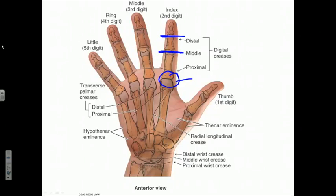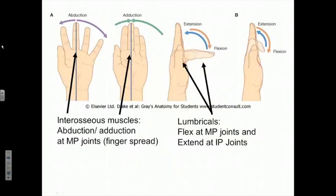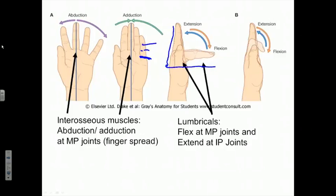We're going to revisit those again now because we have to begin to talk about some intrinsic muscles — muscles that start and end within the confines of the hand — that also act at these various joints. What we identified last time were the major actions possible at the metacarpophalangeal or knuckle joints versus the proximal and distal interphalangeal joints. We said we had the ability to flex and extend our fingers at all three of those joints.